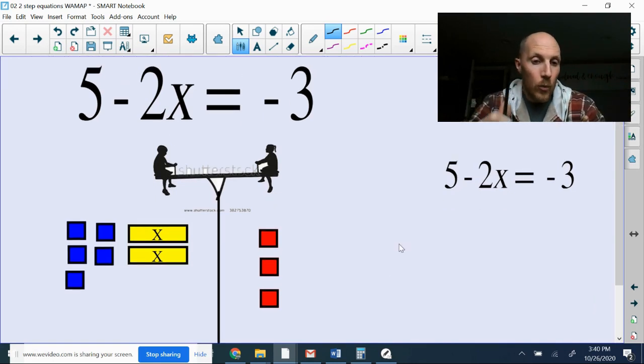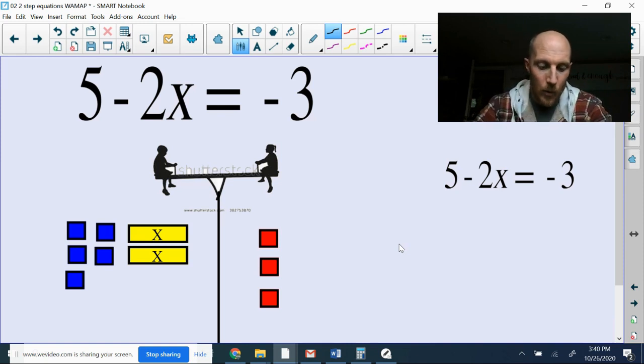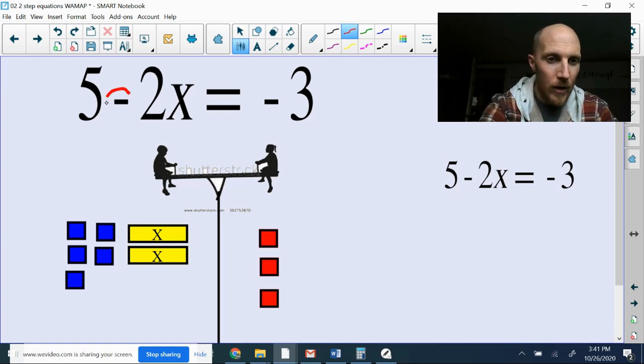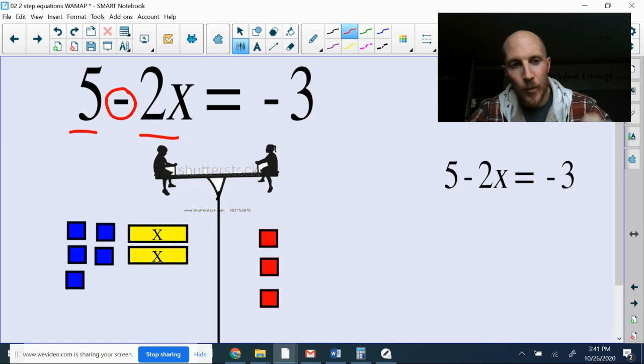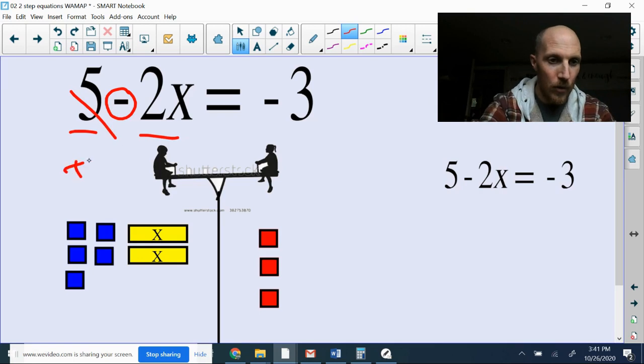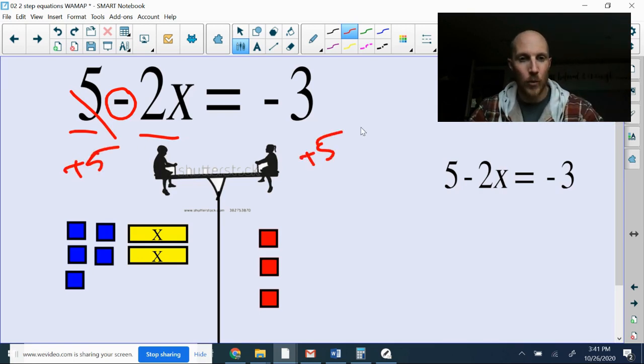Okay. So the thing I really want to make clear about this example is most of the time, the most common mistake people make is they see this minus sign between the 5 and the term that has the x in it. So they say, look, I know I'm supposed to do the opposite in order to get rid of the 5. And since it says minus, that means the opposite would be adding. And so then they add 5, try to cancel out the 5 here by adding 5. And that is not what we're supposed to do.